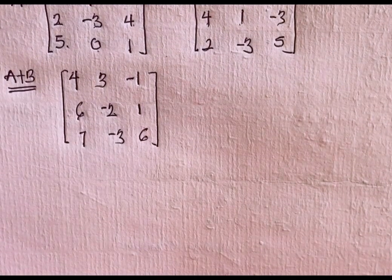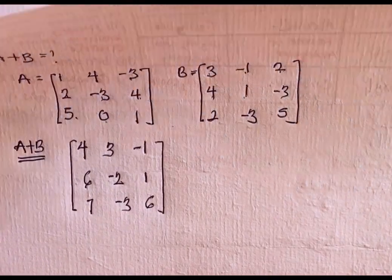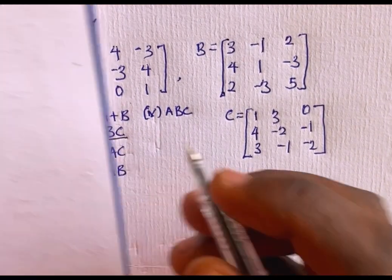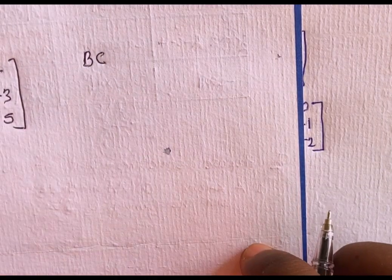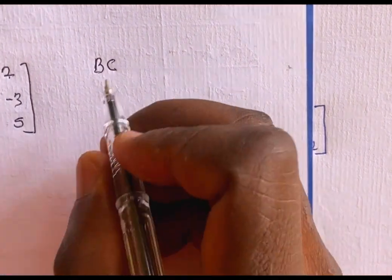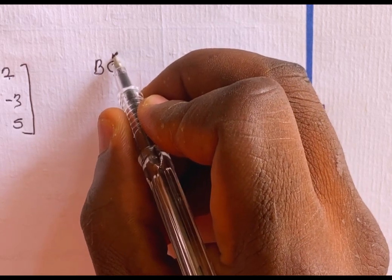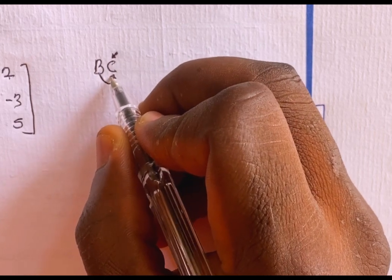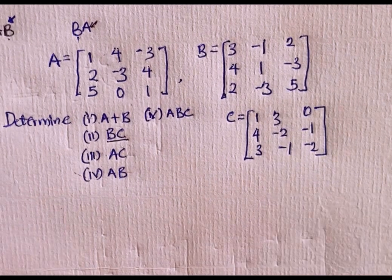That is the algebraic sum of matrix A and matrix B. Let's move to the second case. We are asked to find BC. In the case of BC, you can see that C is pre-multiplied by matrix B, while matrix B is post-multiplied by matrix C.